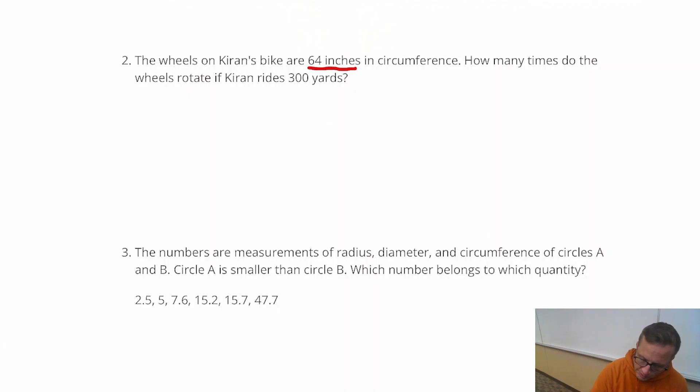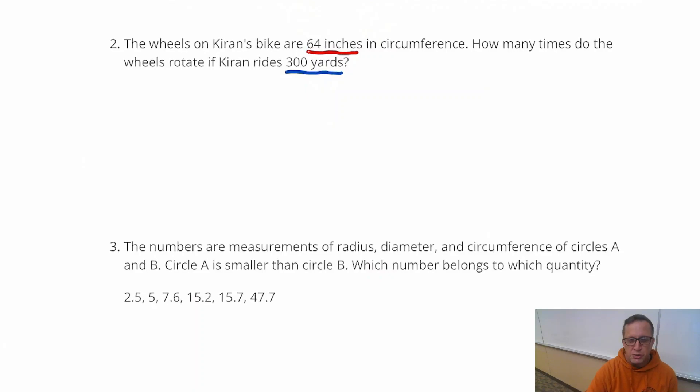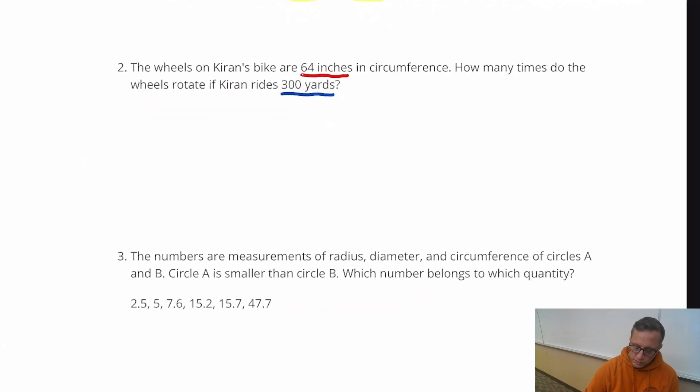That's a circumference, all the way once around his wheel, is 64 inches. Then it describes how far Kiran rides, and it says that Kiran rides 300 yards. So we have inches and we have yards. So what I'm going to do is convert yards to inches. I think that might be easier. Although we're going to get a big number for the number of inches. But that's okay, we're going to use our calculator.